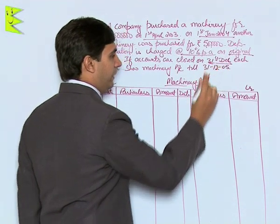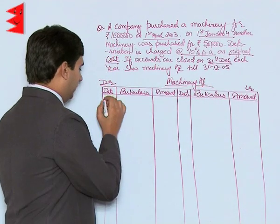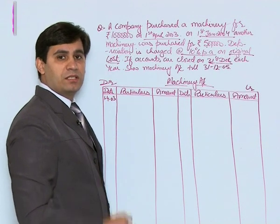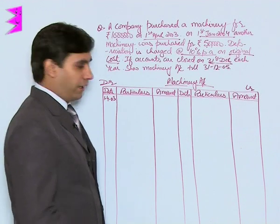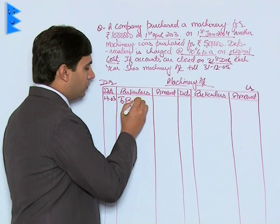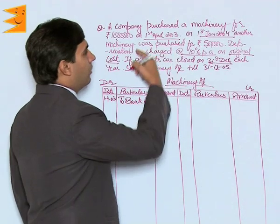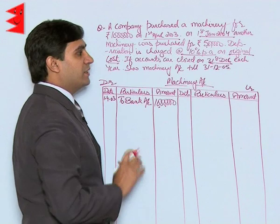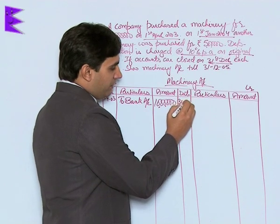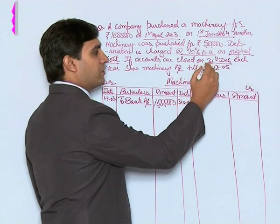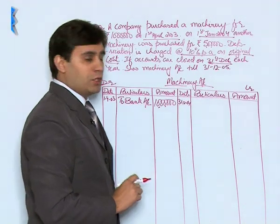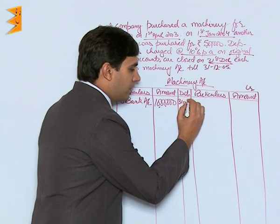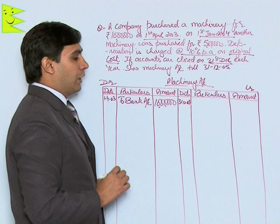Starting from 1st April 2003, we purchased machinery. The journal entry is machinery to bank, so in the machinery account it is recorded as 'To Bank Account' for rupees 10 lakh. This financial year 2003 closes on 31st December 2003, as accounts are closed on 31st December each year.